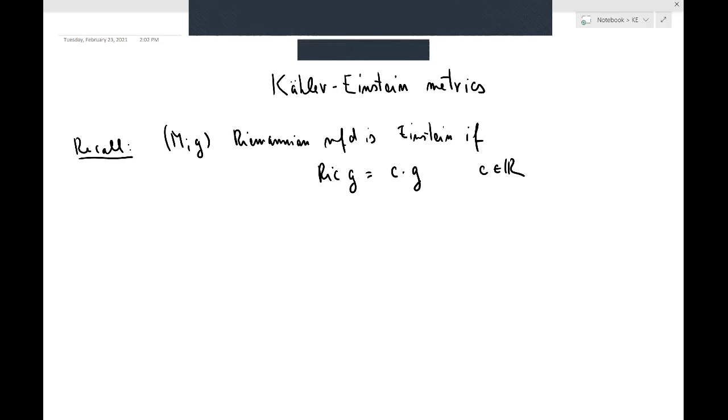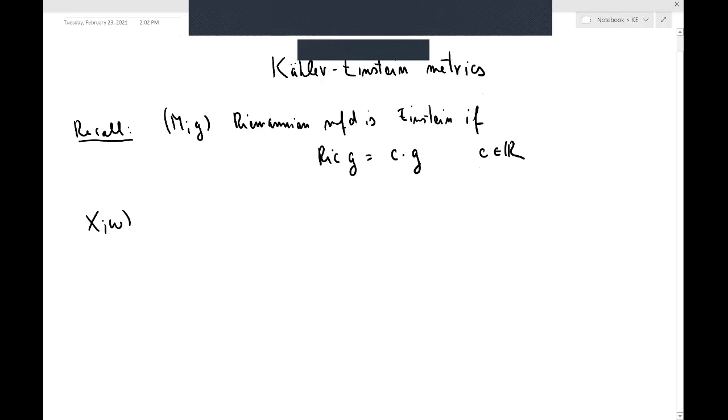So in the Kähler context, there's much more that one can say about Einstein metrics, so-called Kähler-Einstein metrics. So assume that X, omega is Kähler, for the remainder of this lecture.